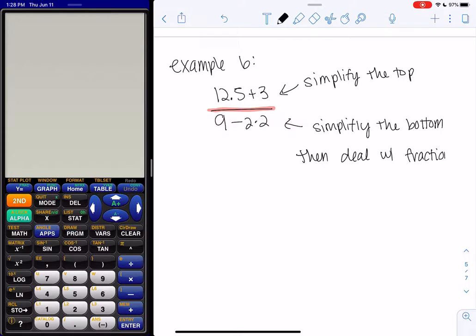If you type this entire statement on your calculator, it will be wrong. So when you type it: 12.5 plus 3, division, and then 9 minus 2 times 2, this is not the answer. The calculator isn't quite understanding what we're asking of it.